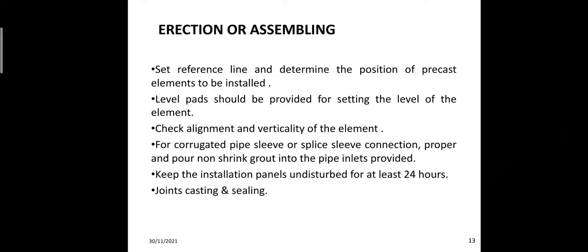Erection or assembling: set reference lines and determine the position of precast elements to be installed. Level pads should be provided for setting the level of the element. Check the alignment and verticality for erected pipe sleeves or split sleeves connections. Pour non-shrink grout into the pipe inlets provided. Keep the installed panels undisturbed for at least 24 hours. Then proceed with joint casting and sealing.